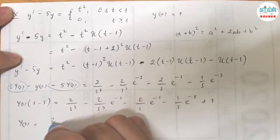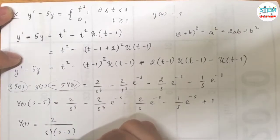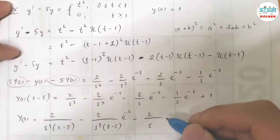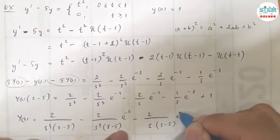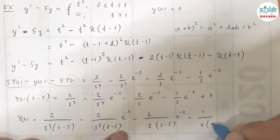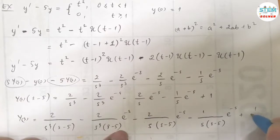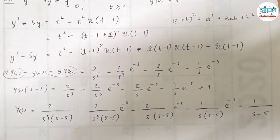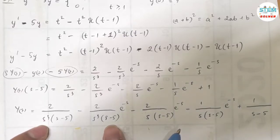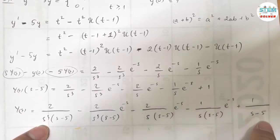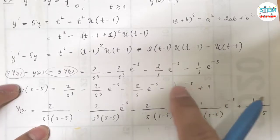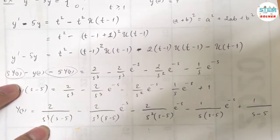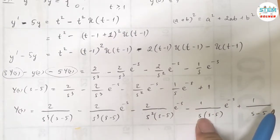Now divide both sides by (s minus 5). Be careful because s and 5 look similar to each other — watch carefully and rewrite carefully so you won't get confused. Going back to correct: you have 2 over s squared — my bad — so s gives s squared. Now let me work this on a separate sheet.